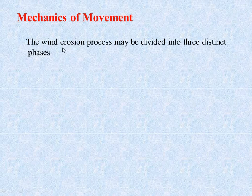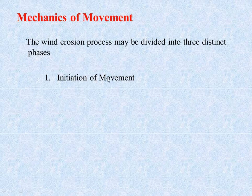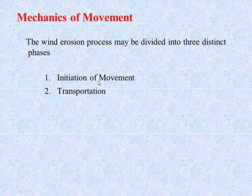Now let's see the mechanics of movement in wind erosion. Wind erosion as a process can be divided into three distinct phases: initiation of movement or detachment of soil particle, transportation, and finally deposition over a distance far away from the original location.